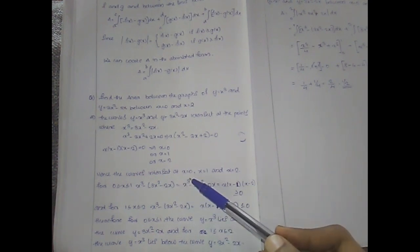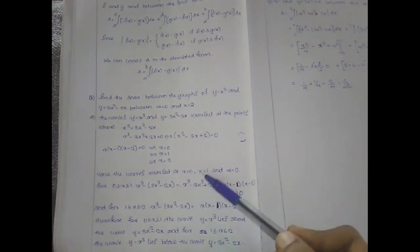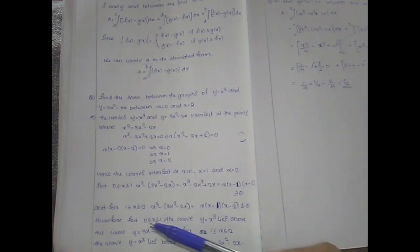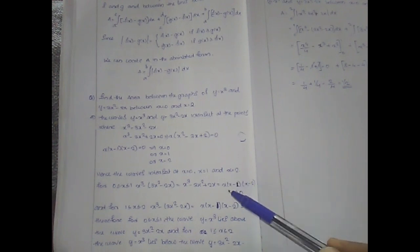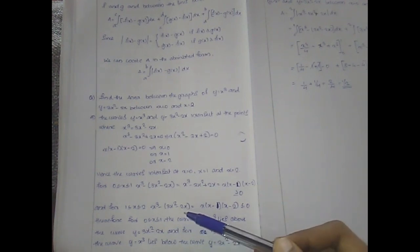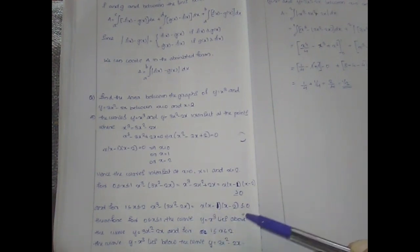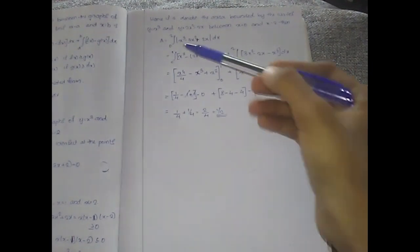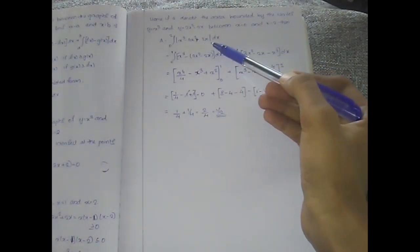The curves intersect at x = 0, x = 1, and x = 2. From 0 to 1, x³ minus 3x² plus 2x is greater than or equal to 0, meaning f lies above g. From 1 to 2, x³ minus 3x² plus 2x is less than or equal to 0, so y = x³ lies below y = 3x² minus 2x. Therefore, the area is given by the integral from 0 to 2 of |x³ minus 3x² plus 2x| dx.